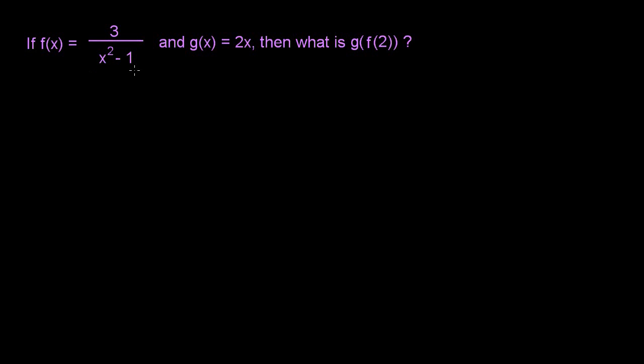If f(x) equals 3 over x squared minus 1 and g(x) equals 2x, then what is g(f(2))?